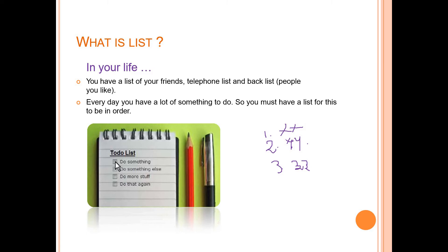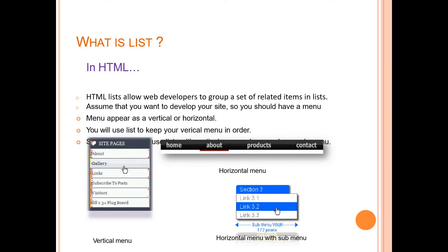Like that, the list concept has to be used in HTML also. If you want to make a group of items at one place, then the list will be used. The list allows developers to group a set of related items in a list. What are the related items that are put at one place, by using the list concept.